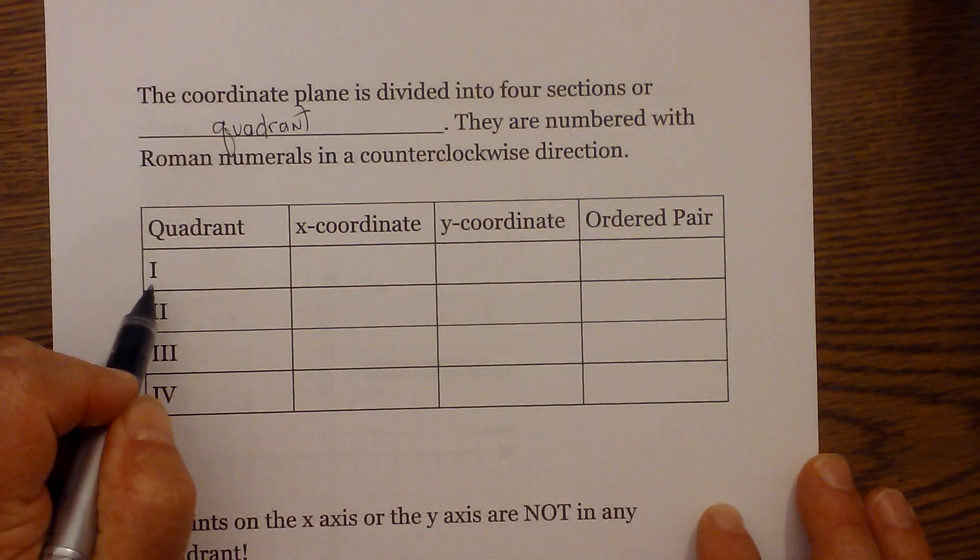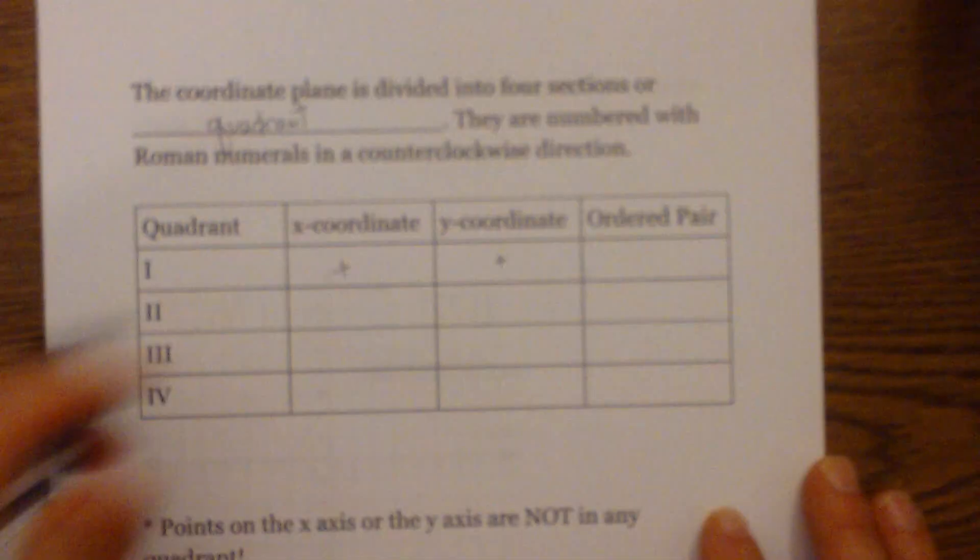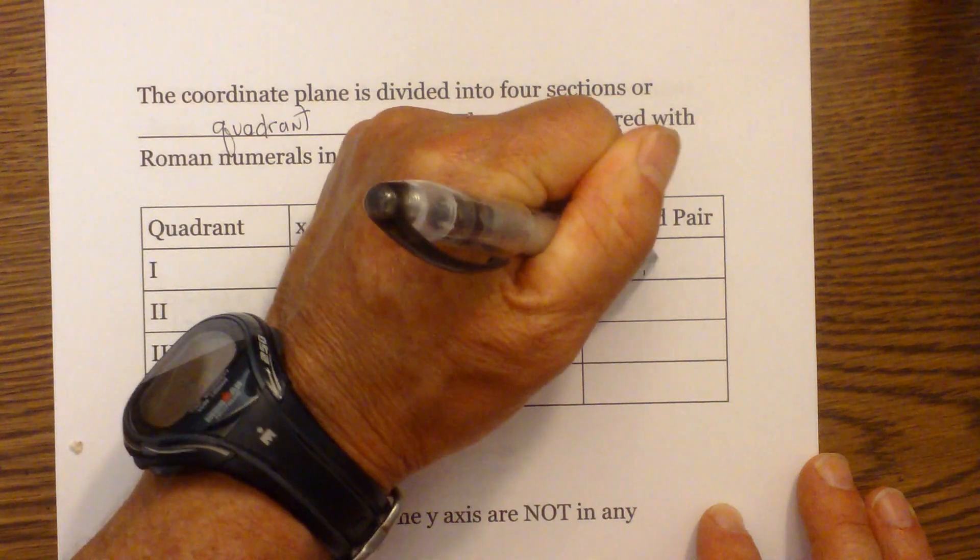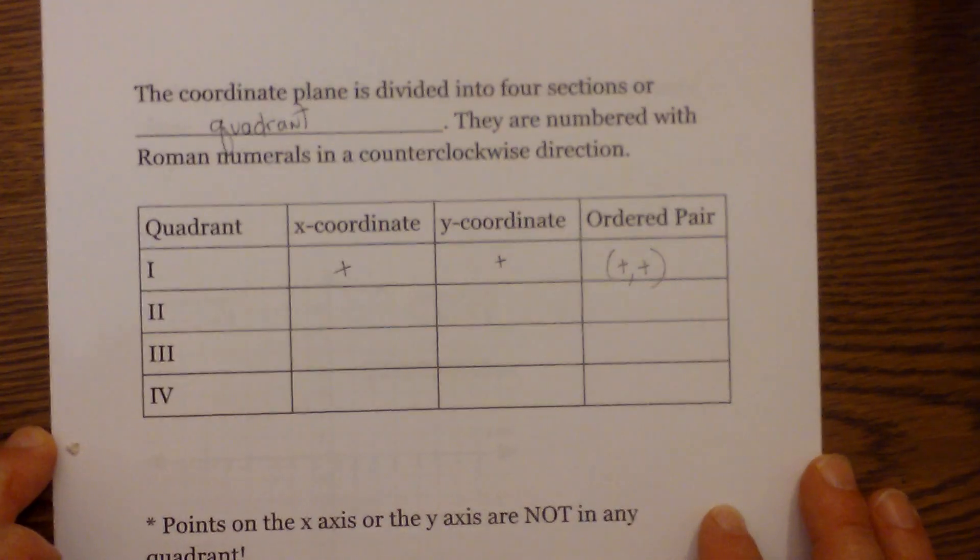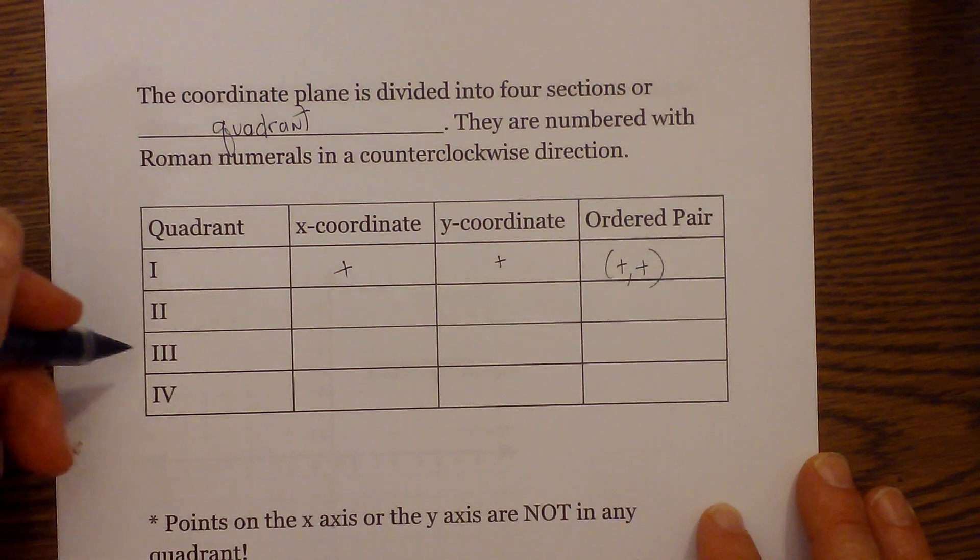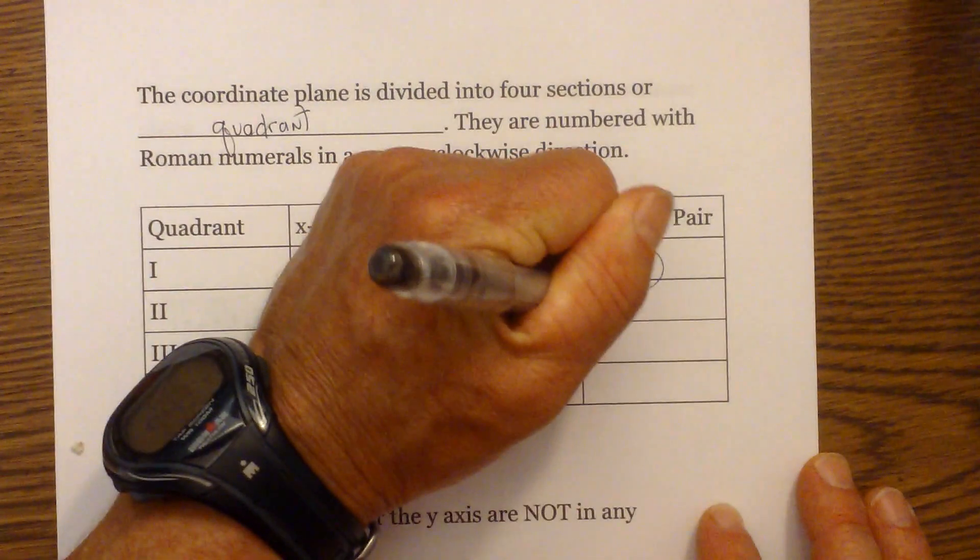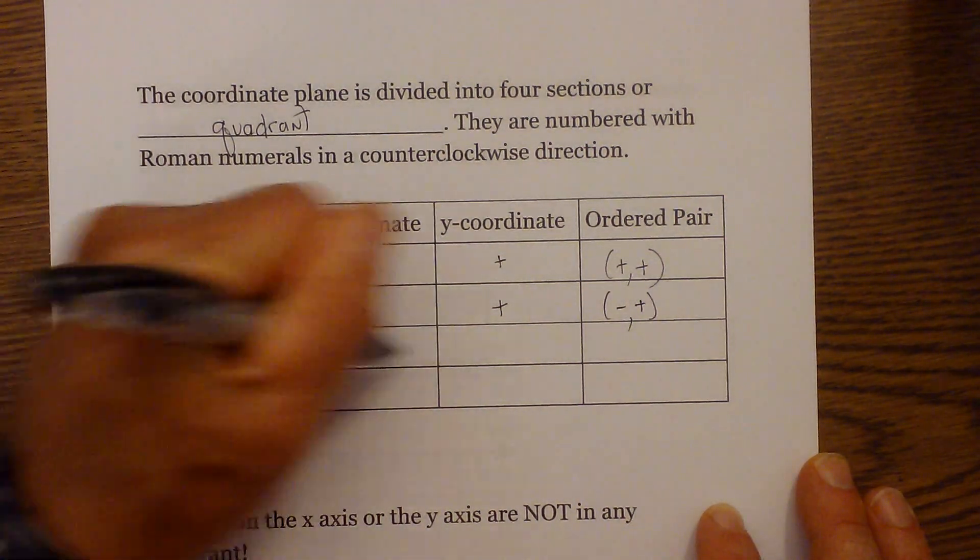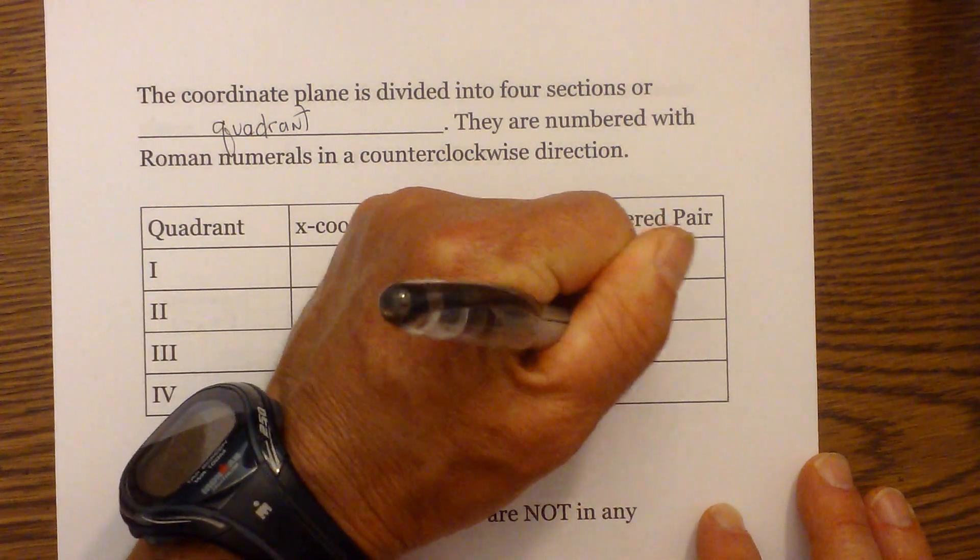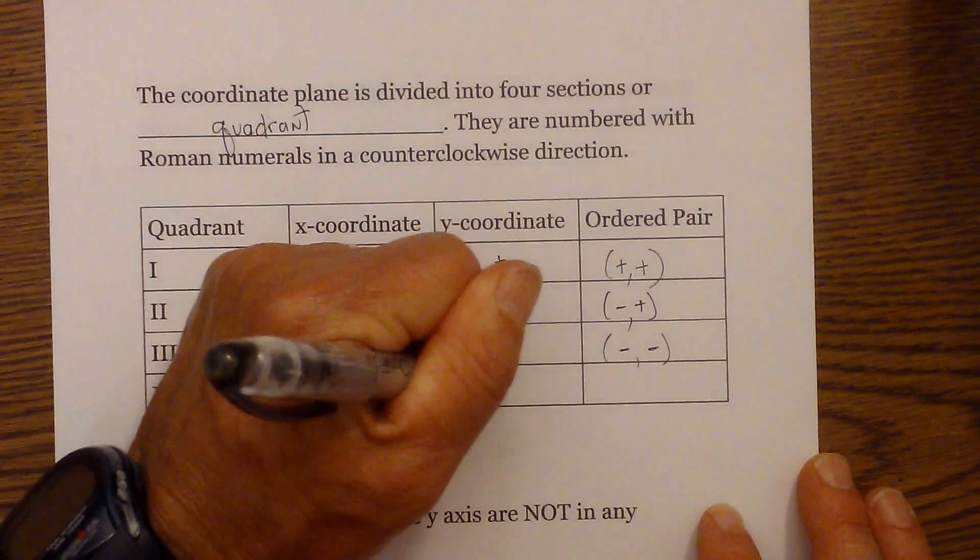So quadrant one, the x coordinate is positive and the y coordinate is positive. So the ordered pair would be positive, positive. Quadrant two is negative, positive. Quadrant three is negative, negative, and quadrant four is positive, negative.